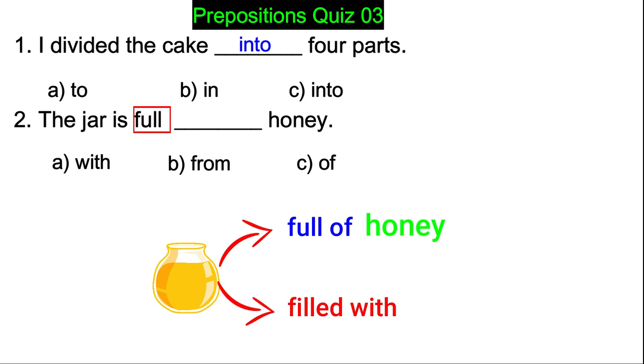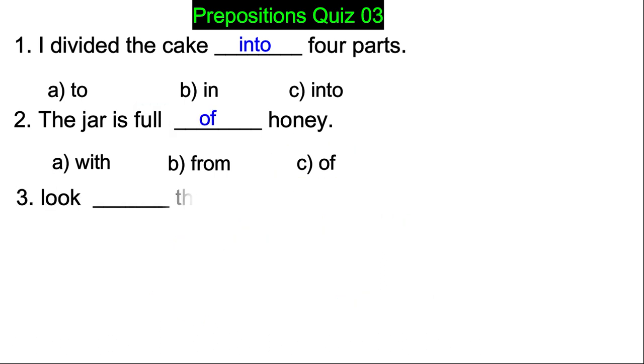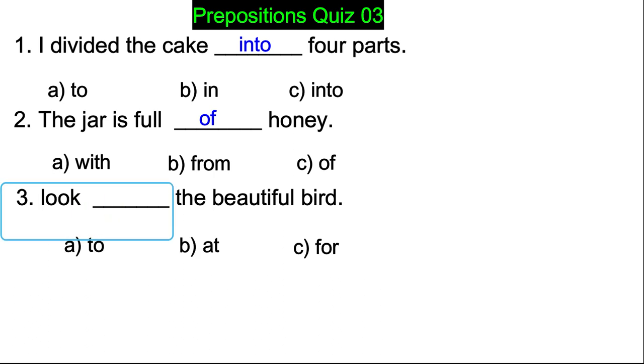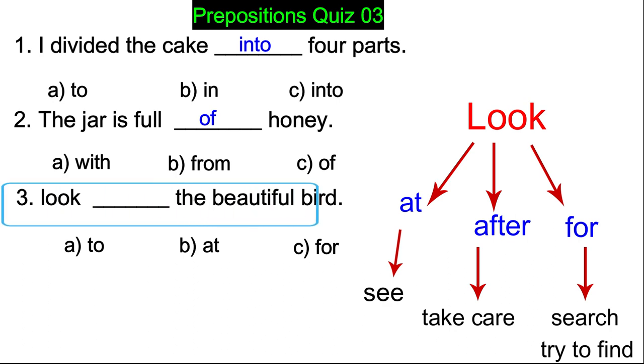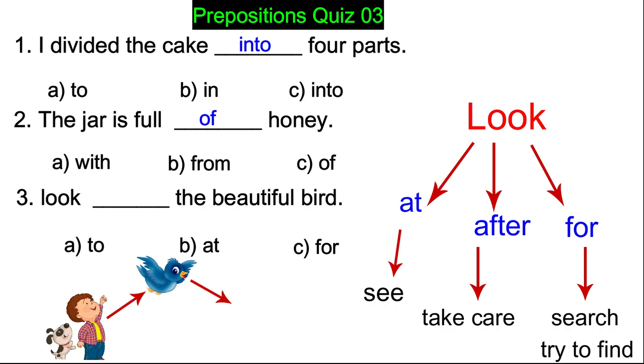Look blank the beautiful bird - to, at, or for? Guys, this is very important. Look takes at, after, and for, but these all have different meanings. Look at means see, look after means take care, and look for means search for or try to find it. So which one should we use here? In this sentence, look the beautiful bird - look here means see. So we take at. Look at the beautiful bird.